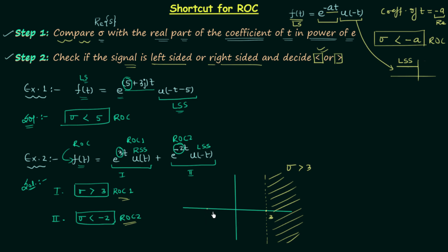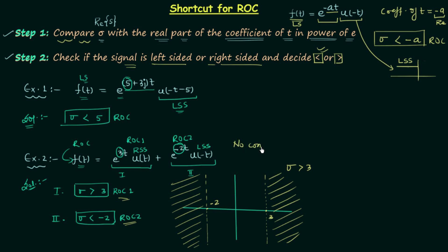For ROC2, we locate sigma equal to minus 2, draw a line there, and shade all the region to the left, representing sigma less than minus 2. We can clearly see that there is no common region of convergence between the two ROCs. This implies there is no Laplace transform. Before calculating the Laplace transform, it is always advisable to check the ROC first, because if there is no common ROC, the Laplace transform will not exist.